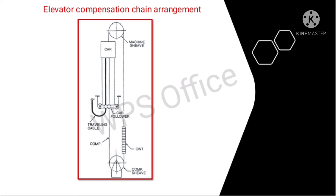The main role of the compensation chain is to balance the weight on both sides of the main cable and compensate the equal weight on both sides. The compensation chain balances these sections and compensates for dynamic imbalance, because the wire rope has weight and the up-and-down movement of the elevator produces a dynamic imbalance. Compensation chains are used to address this.